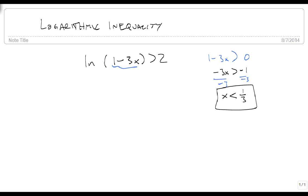So no matter what else happens, x has to be less than 1 third. The next thing we're going to do is look at this and say, the only way to get rid of this natural log is to take advantage of the inverse properties.